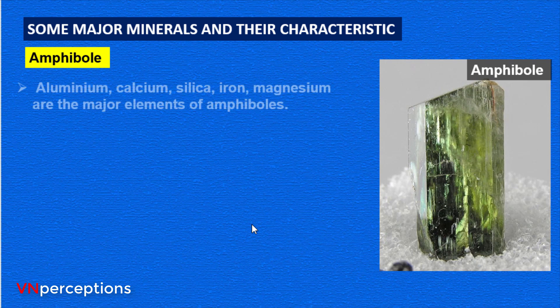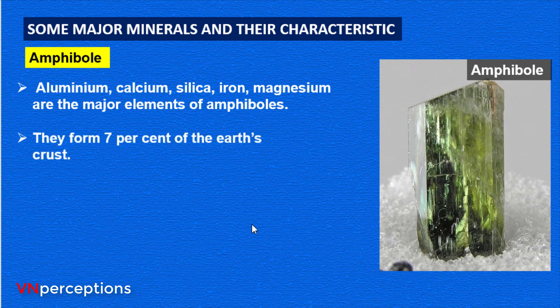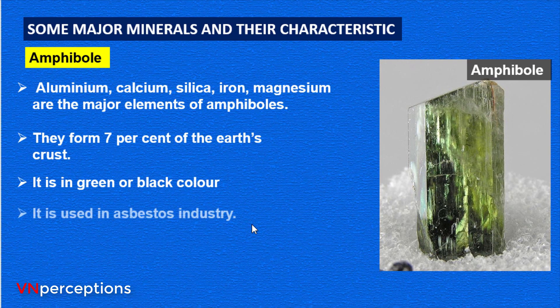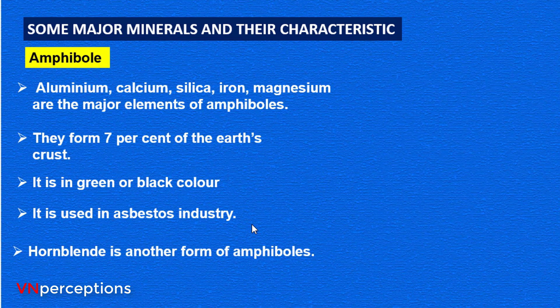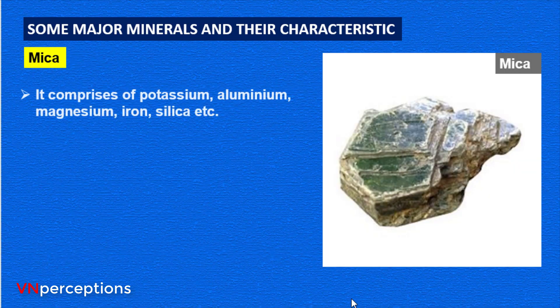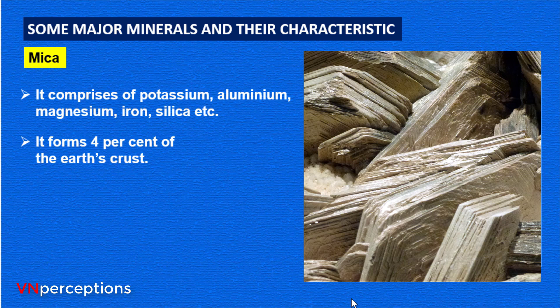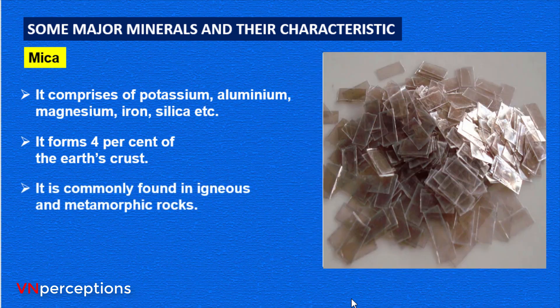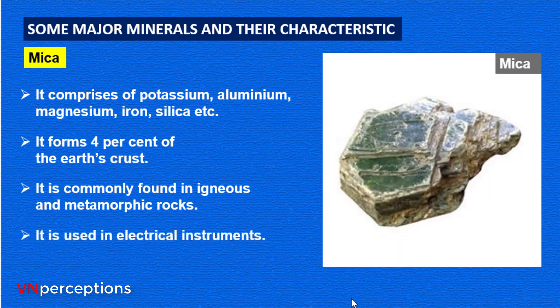Amphibole is made up of aluminium, calcium, silica, iron and magnesium. It forms 7% of the earth's crust and is green or black in color. It is commonly used in the asbestos industry. Hornblende is another form of amphibole. Next is mica, which comprises potassium, aluminium, magnesium, iron and silica. It forms 4% of the earth's crust, is commonly found in igneous and metamorphic rocks, and is used in electrical instruments because it is a bad conductor of electricity and a good conductor of heat — that is why it is used as an insulator, very commonly in iron geysers, etc.